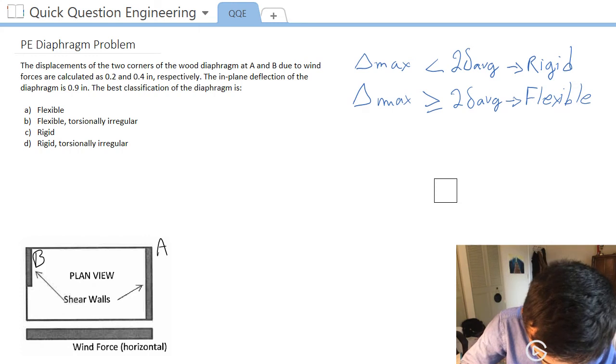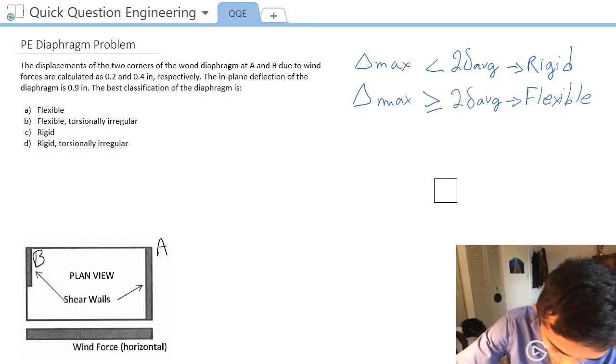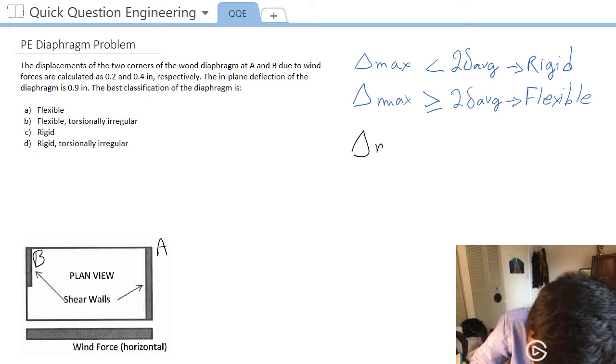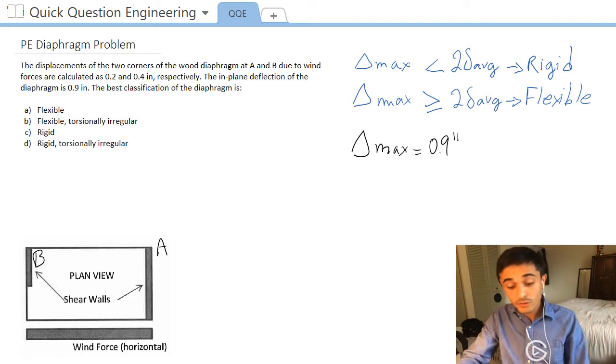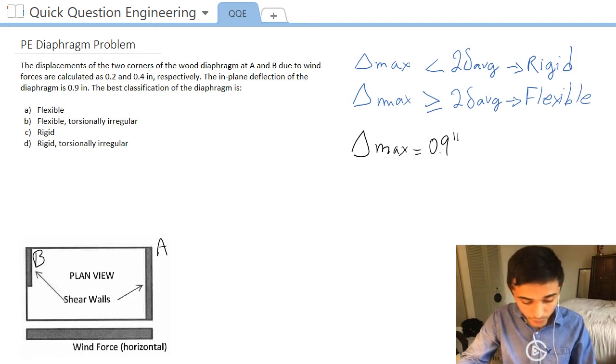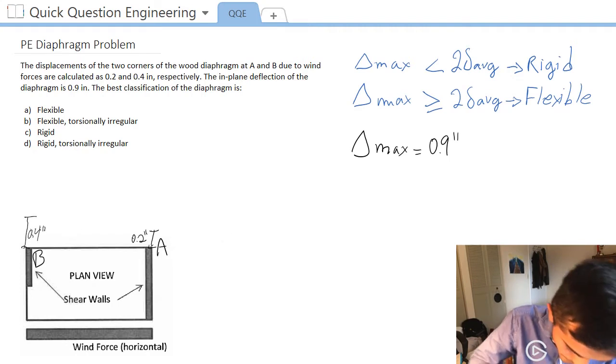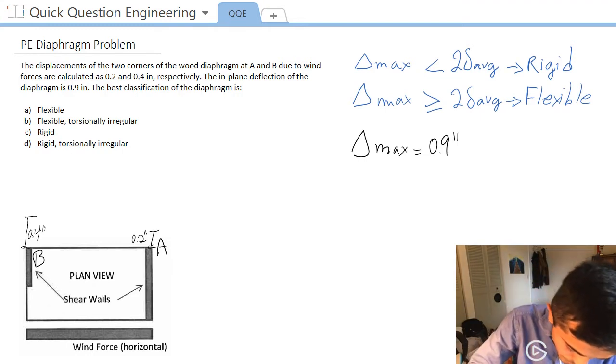We know that the in-plane deflection of the diaphragm is 0.9 inches, so we already know what our delta max is equal to 0.9 inches. Now, what is two times the average story drift? So let's look into deflection at point A is 0.2 inches, and deflection at point B is 0.4 inches.